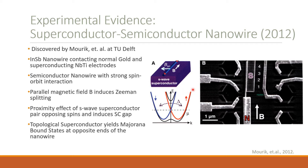An SEM image of the device is shown here, with the nanowire and the normal and superconducting electrodes. There is also a tunnel junction in between the electrodes. This combination of semiconductor nanowire, the layered superconductor, the spin-orbit interaction, and the applied parallel magnetic field is known as the topological superconductor, and this yields Majorana bound states at opposite ends of the nanowire, indicated by the red stars.